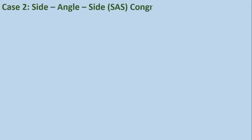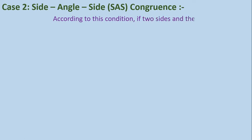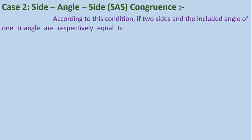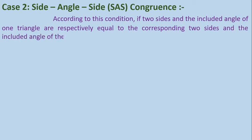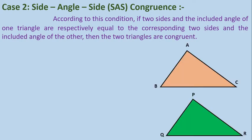The second condition is Side-Angle-Side, or SAS congruence. According to this condition, if two sides and the included angle of one triangle are respectively equal to the corresponding two sides and the included angle of the other, then we can say that the two triangles are congruent.